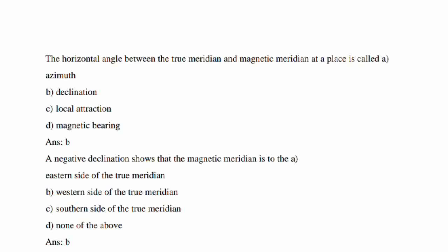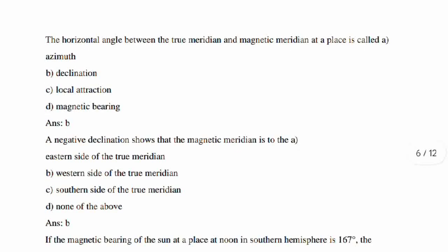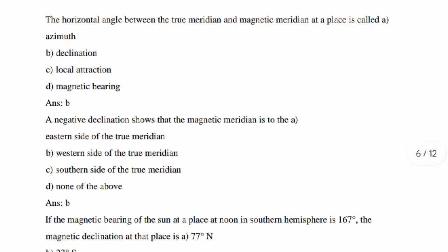Next question, the horizontal angle between the true meridian and magnetic meridian at a place is called what? The horizontal angle between the true meridian and magnetic meridian at a place is called as declination.